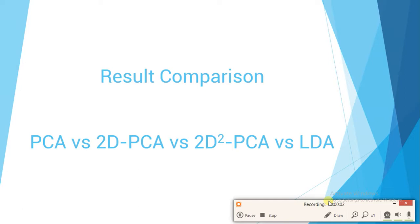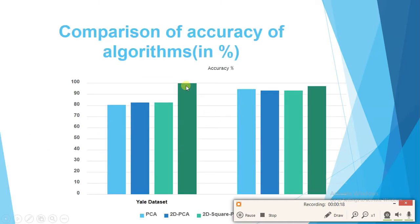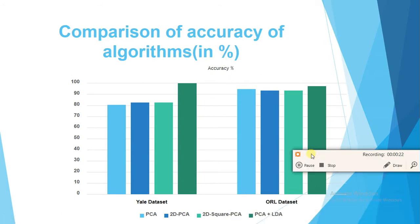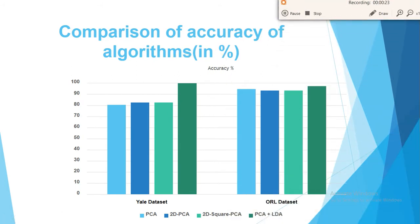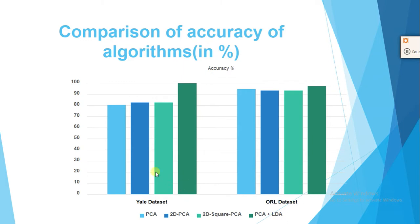Hello guys. Now that we have seen all the face recognition algorithms, we are going to see a result comparison of these algorithms on two datasets. We are going to compare PCA versus 2D PCA versus 2D Square PCA and RDA.